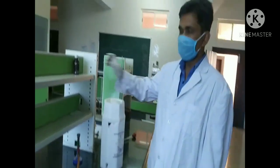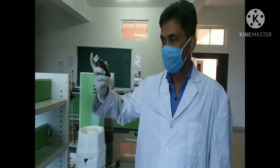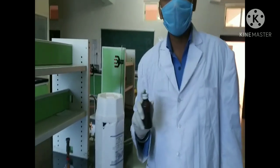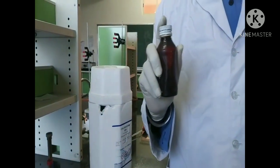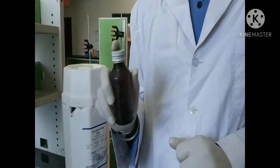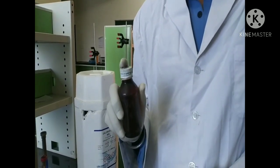Now simply we have to transfer it into an amber colored bottle. This is an amber colored bottle. Why do we use amber colored bottle instead of transparent bottle? Because chloroform reacts with light and produces harmful gases.